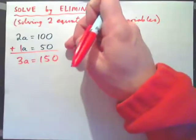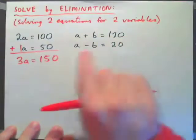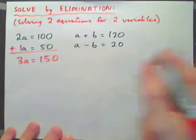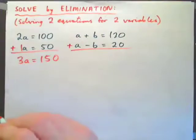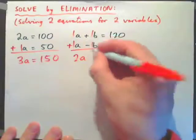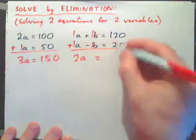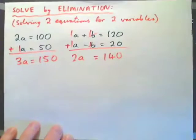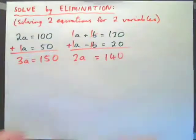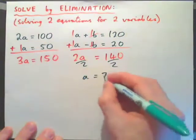That's a new concept. Let's look at these two equations: an apple plus a banana costs 120 cents, and an apple minus a banana equals 20 cents. If we add these two equations together, one apple plus one apple gives two apples, and one banana minus one banana gives zero bananas — so the bananas are eliminated. 120 plus 20 equals 140, so two apples equal 140 cents. Dividing both sides by two, an apple costs 70 cents.